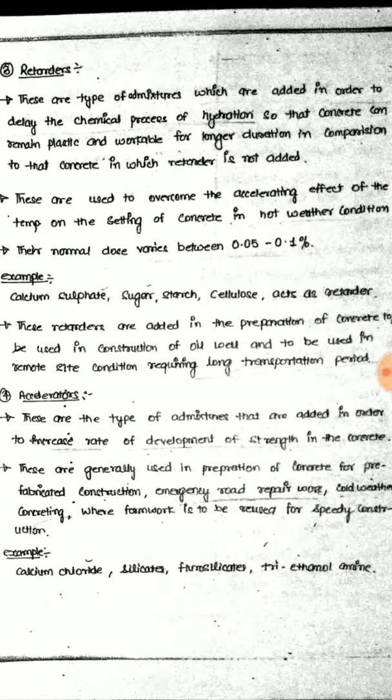Examples of retarders include calcium sulphate, sugar, starch, and cellulose. Retarders are added in the preparation of concrete for pre-fabricated construction, and are used in construction of oil wells and in remote site conditions requiring long transportation periods.